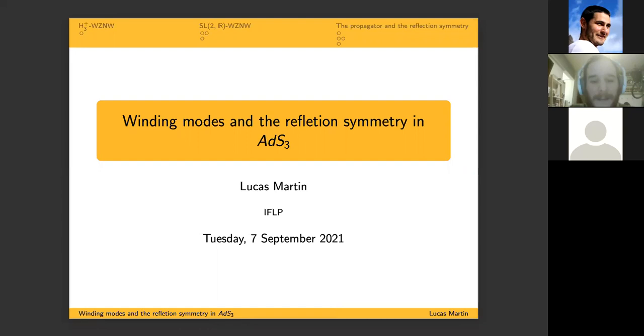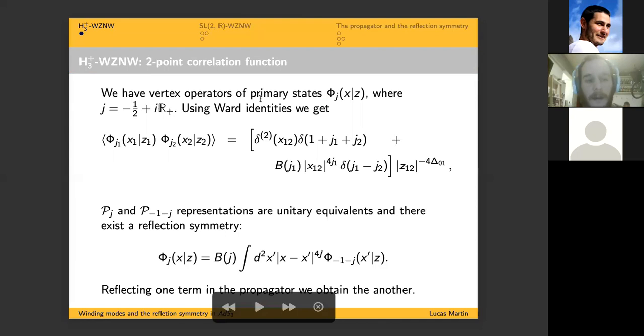We are going to talk about winding modes and the reflection symmetry in AdS3. We start discussing the Euclidean model. The counterpart is in H3 with some non-compact Weil model. In this model we have primary states phi labeled by the letter j, and we have vertex operators where the letter j can take values in that expression.